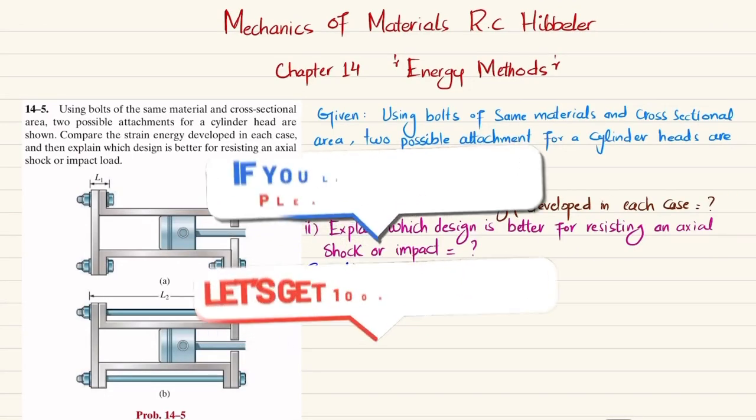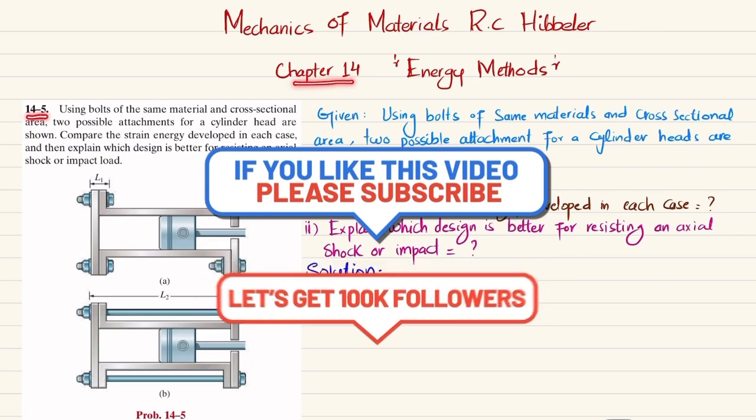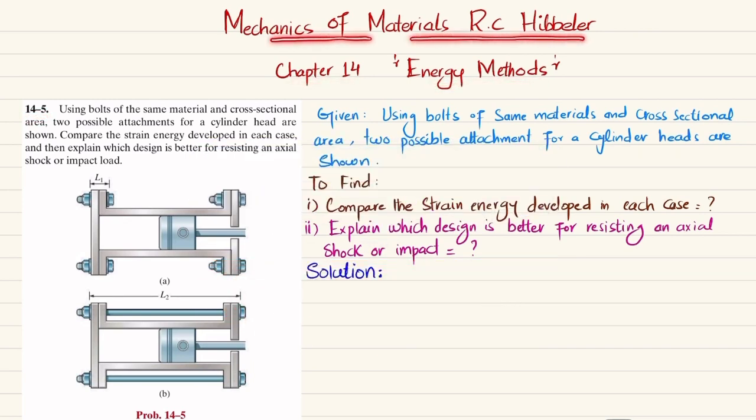Welcome back. In this video we are going to solve problem 14-5, taken from Chapter 14: Energy Methods, in Mechanics of Materials by R.C. Hibbeler. The problem statement is: Using bolts of the same material and cross-sectional area, two possible attachments for cylinder heads are shown. Compare the strain energy developed in each case.